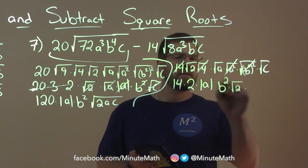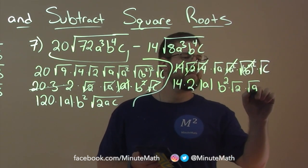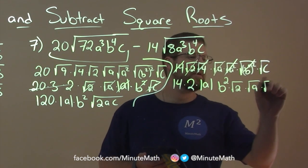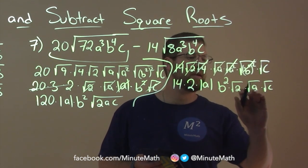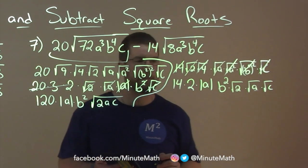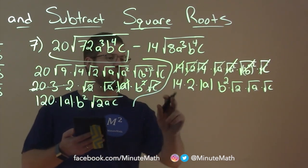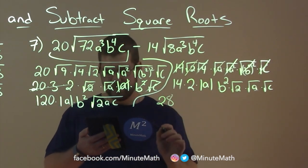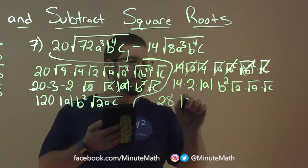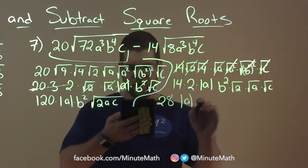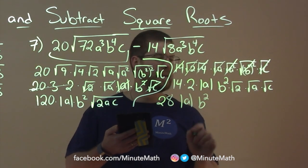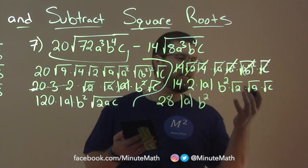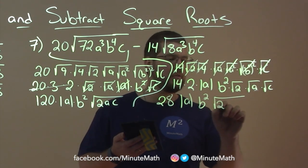And now we're left with everything with square roots. We have square root of 2. Square root of a. And then square root of c. Let's combine our like terms. And 14 times 2 is 28. Absolute value of a is still here, and then we have our b squared comes down. Fantastic. And we put all this as one square root, square root of 2ac.